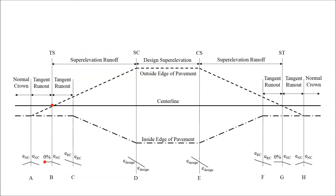Point B represents the TS point for a spiral curve or the beginning of the superelevation runoff for a simple curve. For a spiral curve, the superelevation runoff and the spiral length are equal. The inside edge of pavement is still below the center line at the same relative elevation as normal crown because the inside lane has not yet begun to rotate. Point C is the point of reverse crown, where the entire pavement width has a cross slope equal to the normal crown slope. The distance from point B to point C is the tangent runout length. The outside edge of pavement has rotated to a point above the center line at the same magnitude as the inside edge is below it. At point C, the inside begins to rotate for the first time and will rotate at the same rate and magnitude relative to the center line as the outside edge of pavement.